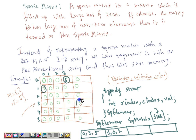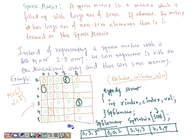For the third non-zero element, the row index is 3, the column index is 4, and the value is 3. For the fourth non-zero element, the row index is 4, the column index is 1, and the value is 9. This sp_matrix array is actually representing the full 6×5 sparse matrix, and all elements not represented in this linear form are considered zero.